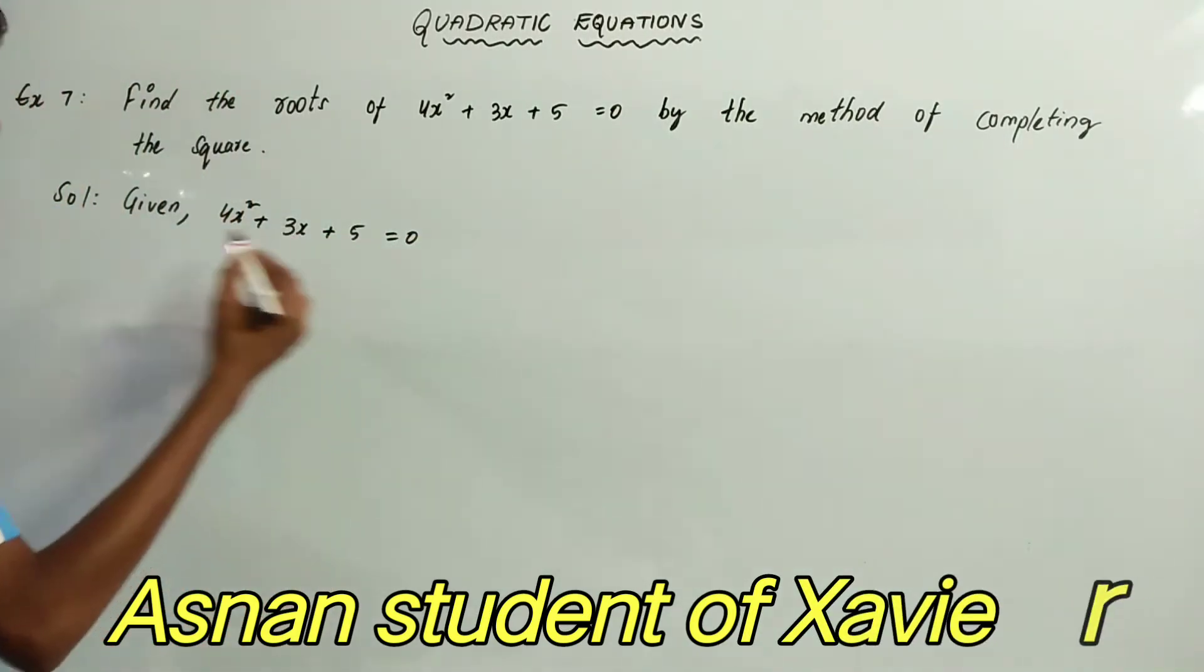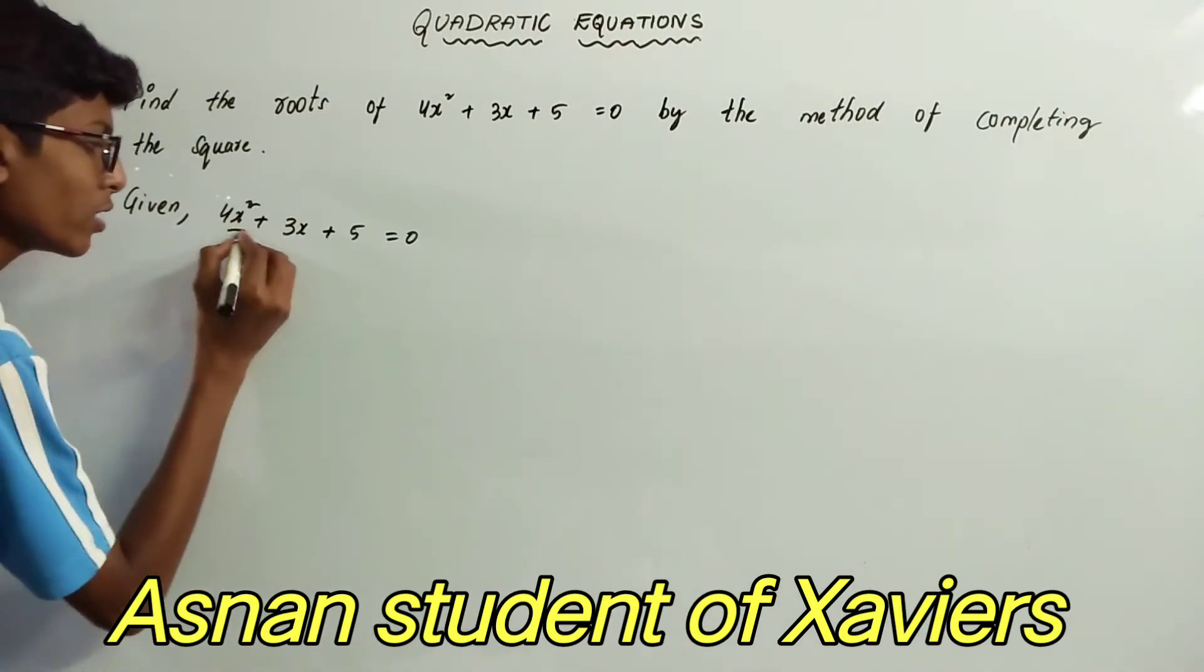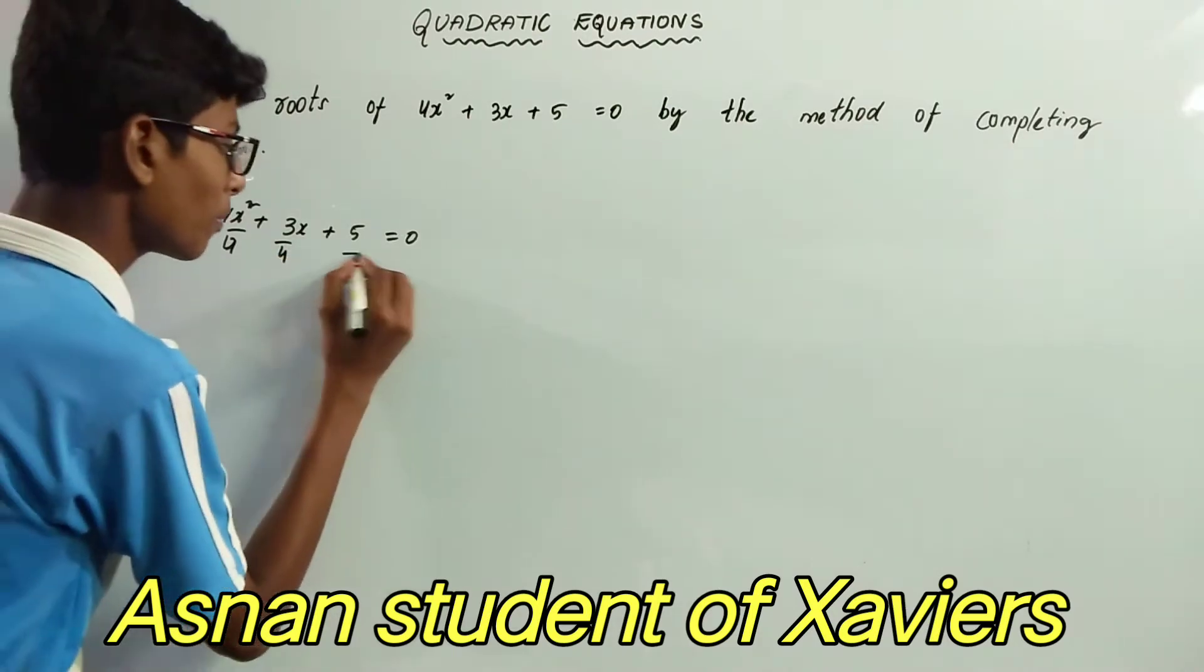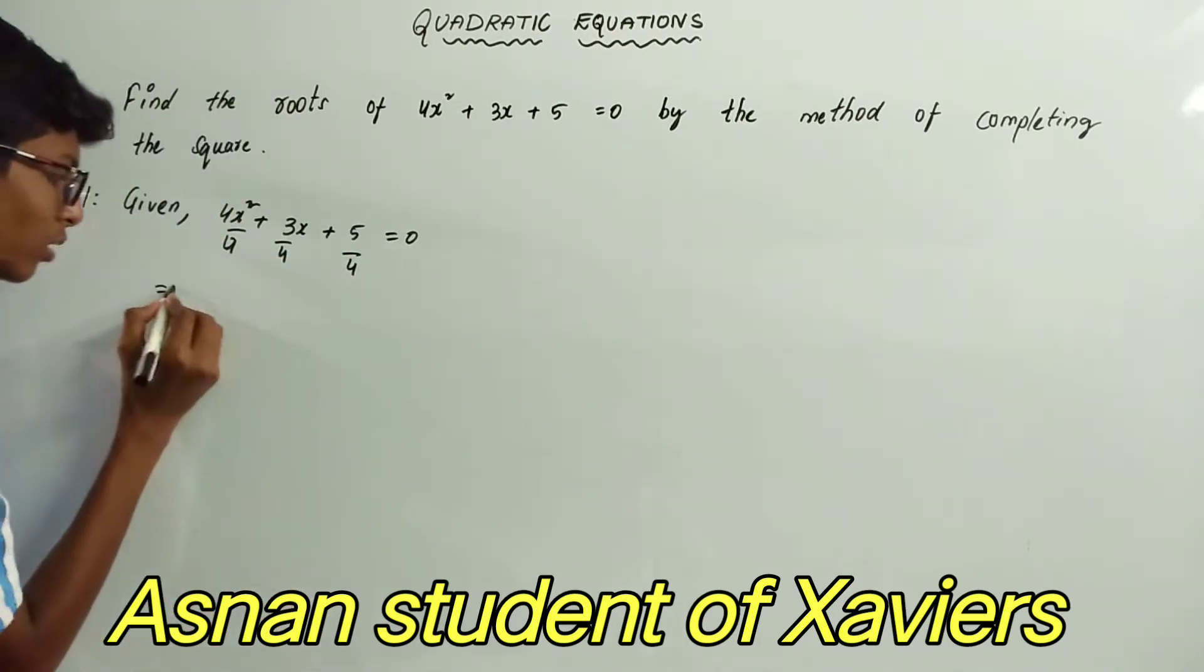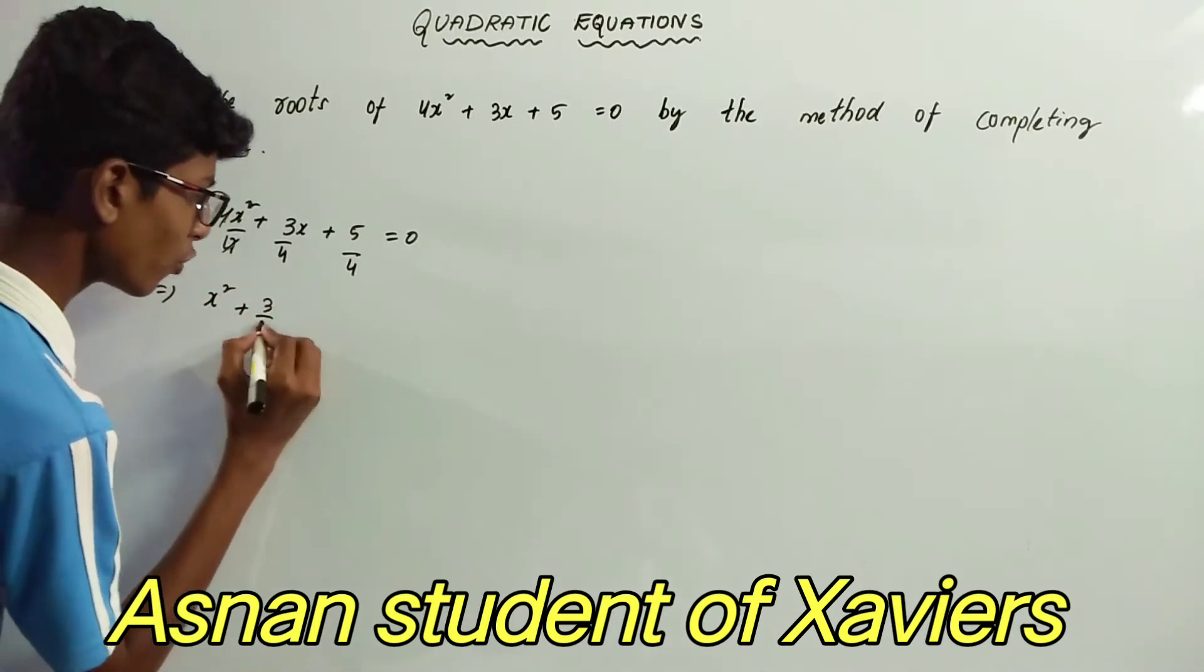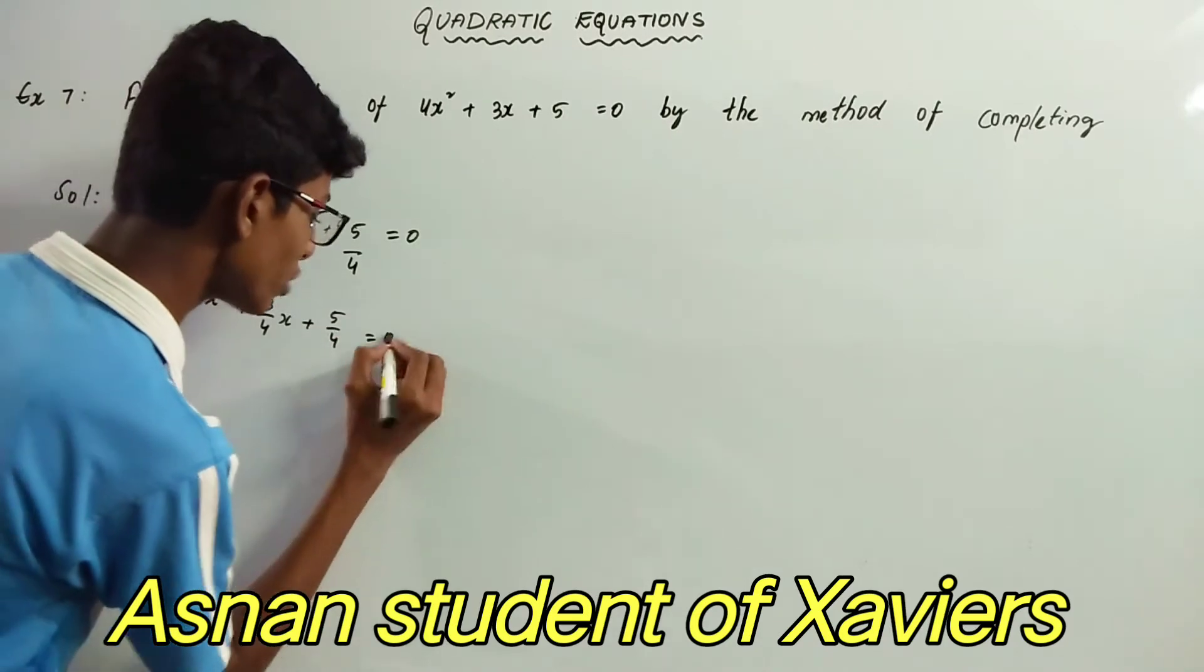We have to divide all the terms of the equation by the coefficient of the first term, that is 4. So 4x² by 4, 3x by 4, 5 by 4. Here 4 and 4 get cancelled. x² + (3/4)x + 5/4 = 0.